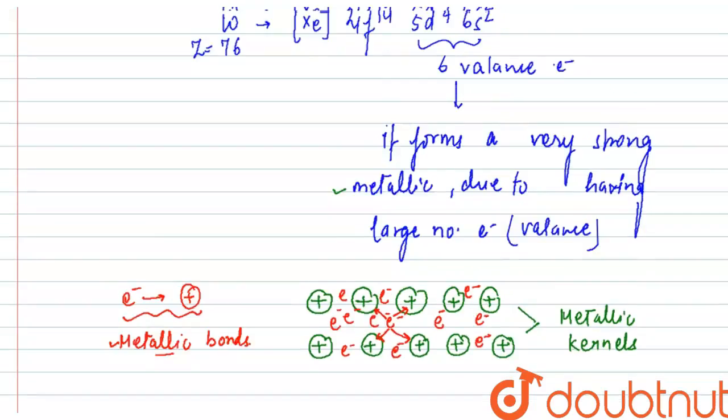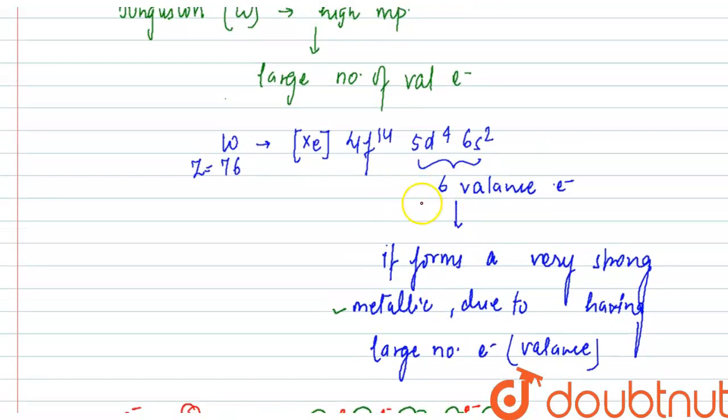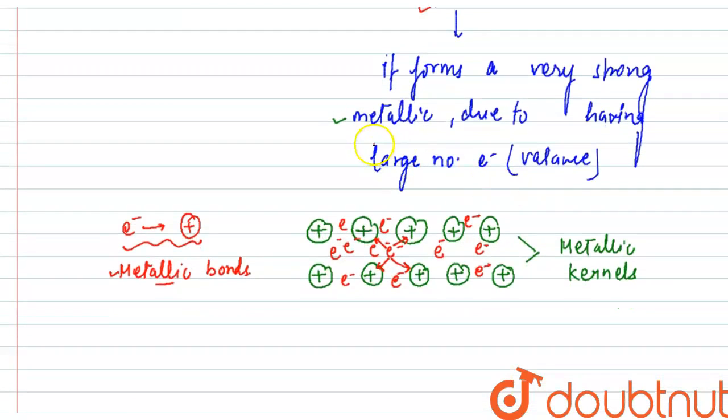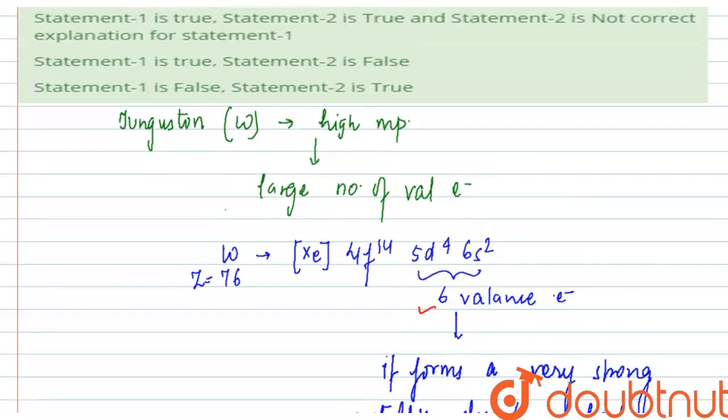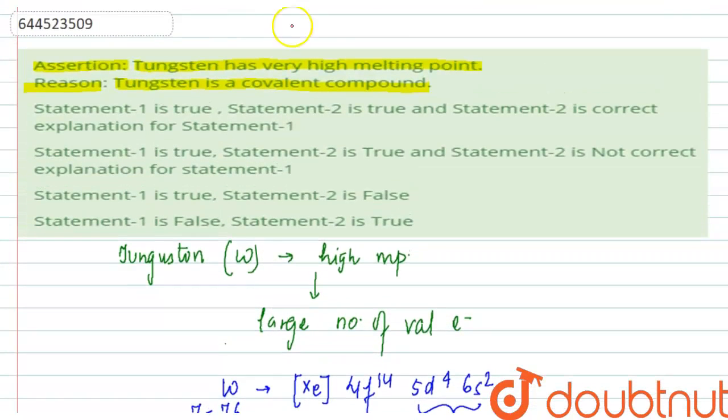More electrons means more interactions, which means the metallic bonding will be stronger. In tungsten, we can see that it has a total of six valence electrons that it can lose. Having more valence electrons means it will have stronger metallic bonds, and due to this reason, it will have a high melting point. So this statement becomes true.